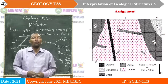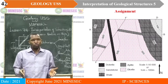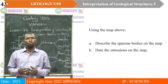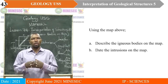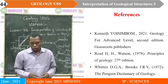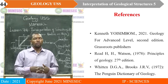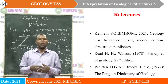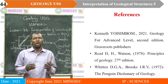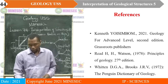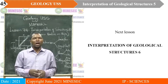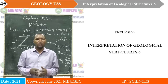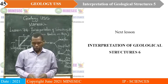Now, here is your map for the assignment — work with this map at home. Observe it, assess it, and answer the following: describe the igneous bodies on the map, and date the intrusions on the map. You can use Geology for Advanced Level or the Principles of Geology to assist you in understanding the different intrusions, how to describe them, and how to identify them on maps. We have come to the end of our lesson. Our next lesson will be on interpretation of geological structures 6, focusing on surface deposits. See you in our next lesson.